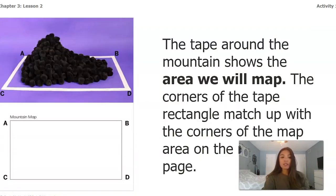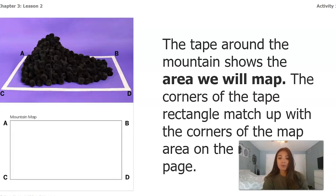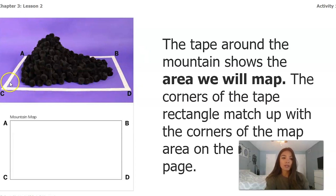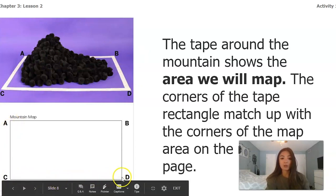You'll notice that in the picture of the mountain model there is tape around the edges. The tape around the mountain shows the area that we will map. The corners of the tape rectangle match up with the corners of the map area on our notebook page, so that tape is what we're going to use as the boundary of our rectangle in our mountain map.